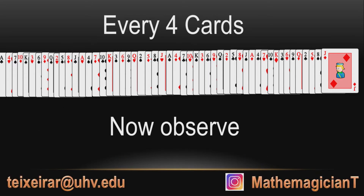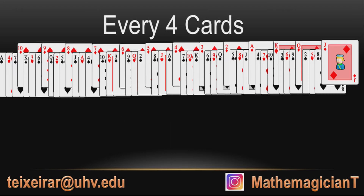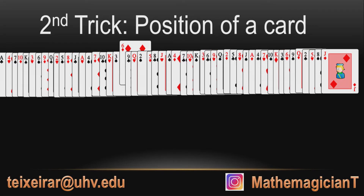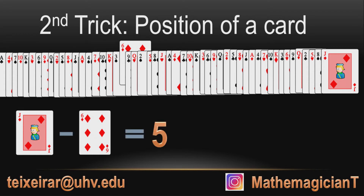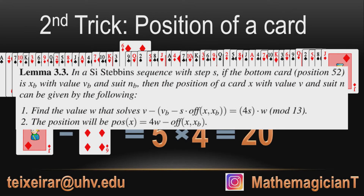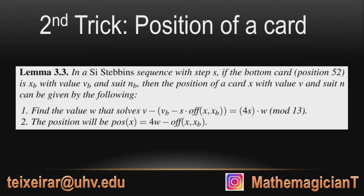There's more. If you observe every four cards, they are the same suit in decreasing order. This only happens if you have step three — that's why it's so used by magicians. So if you know the bottom card, you can find any card's position. For example, what's the position of the six of diamonds? You take the bottom card and subtract the desired card — that's 5. Since it's every four cards, the position of the card will be number 20.